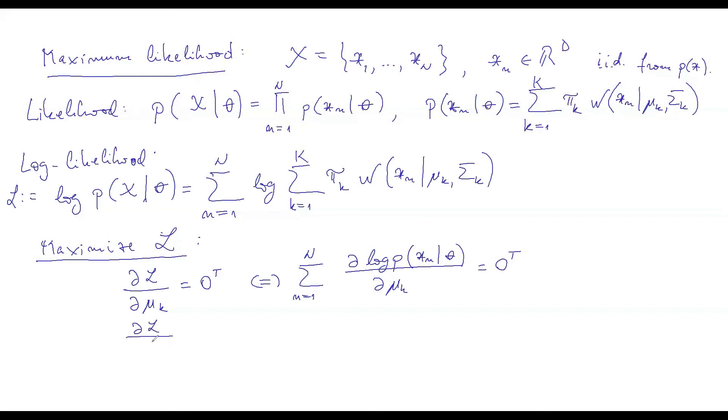And the same thing for, we will set out to have this partial derivative dL to d sigma k. And that one, we will also say that it's got to be matrix zero. And this is the same way as saying sum of, from 1 to n, d log of p of xn with respect to theta, partial derivative with sigma k. And again, there is only one term from this sum, the other ones are constant. It's got to be the zero matrix.